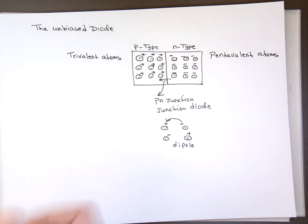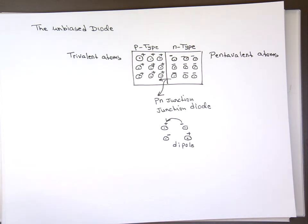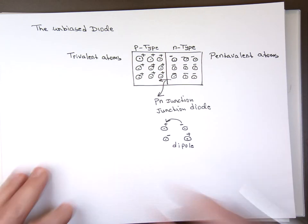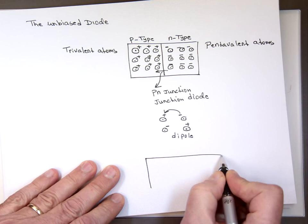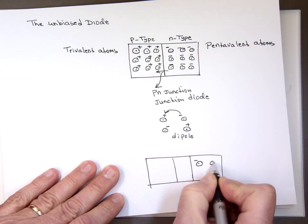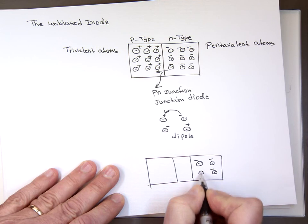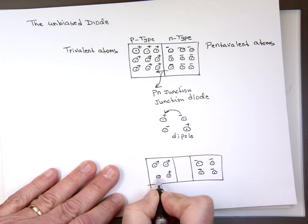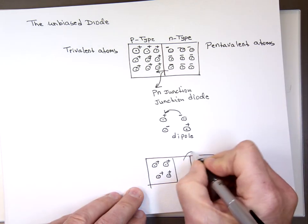What a dipole means is that the creation of a dipole means one free electron and one free hole have been taken out of circulation — they're no longer available. This area is called the depletion area, or depletion layer. As these electrons leave the n-type and recombine with holes, if you watch that crystal, we used to have nine electrons there, now we might have maybe six or four left here. This area right here is called the depletion layer.